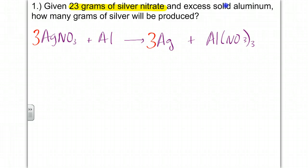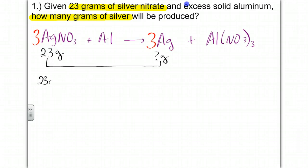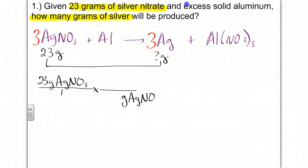Our givens in the problem are 23 grams of silver nitrate, and we need to find how many grams of silver. We'll write that: 23 grams of silver nitrate — question: how many grams of silver? We will stoic from silver nitrate to silver. So we'll place 23 grams of silver nitrate all over one, then draw a line and bring down the grams of silver nitrate, which equals one mole of silver nitrate.